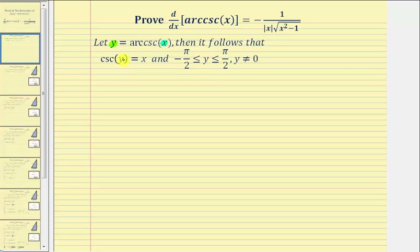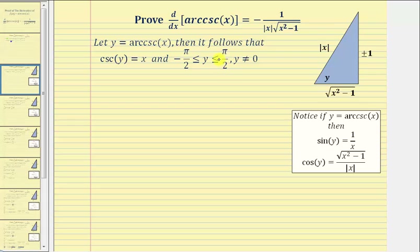Because cosecant y is equal to x, and cosecant theta equals the ratio of the hypotenuse to the opposite side, let's model y using a reference triangle. When the angle y is in the first quadrant, x is positive, but when y is in the fourth quadrant, x is negative. Since the hypotenuse is always positive, we label it the absolute value of x, and label the opposite side plus or minus one — negative one if x is negative, positive one if x is positive.